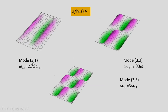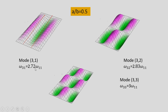For mode (3,1) with m = 3, two nodal lines appear in the x direction, while n = 1 gives no nodal lines in the y direction. The frequency ω₃₁ = 2.72·ω₁₁. These two nodal lines are fully visible — one portion elevated, another elevated, with green color indicating depression.